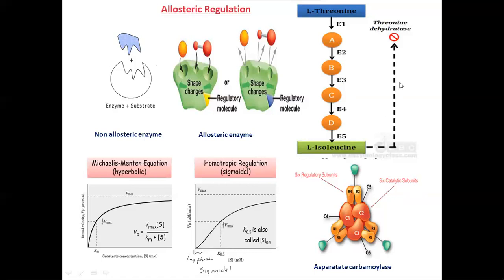The feedback inhibition process is also one type of allosteric regulation. Here L-isoleucine will be biosynthesized from L-threonine. The end product produced inhibits the regulatory enzyme, threonine dehydratase. This is a multi-step process in which five enzymes are involved to form L-isoleucine. In feedback inhibition, the end product inhibits the regulatory enzyme activity.